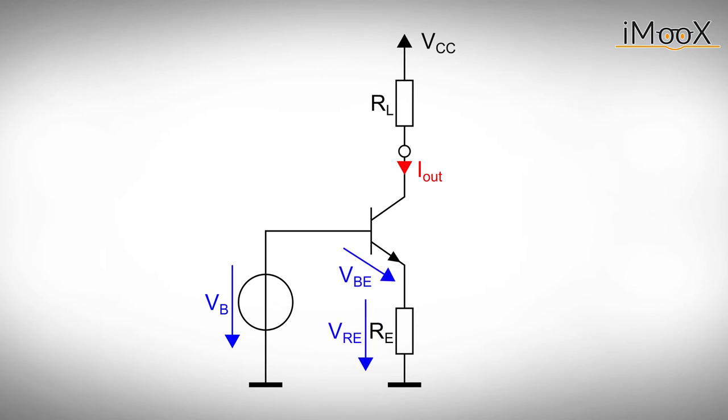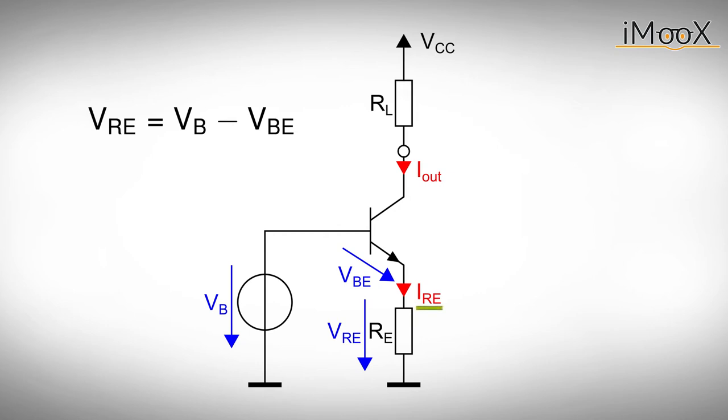The voltage source provides a constant voltage which is high enough to forward bias the base emitter diode of our bipolar transistor. Assuming a constant base emitter voltage VBE of 0.6 to 0.7 volts, we can calculate the voltage at resistor RE. The current IRE flowing through this resistor equals VB minus VBE over RE. If the voltage VBE remains constant, so does the current IRE.